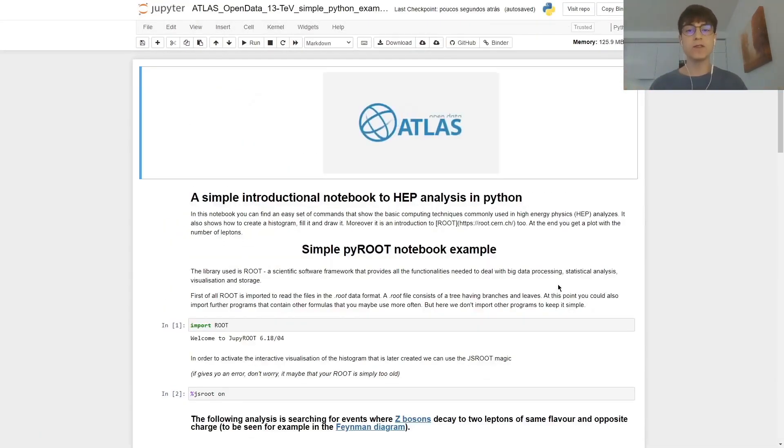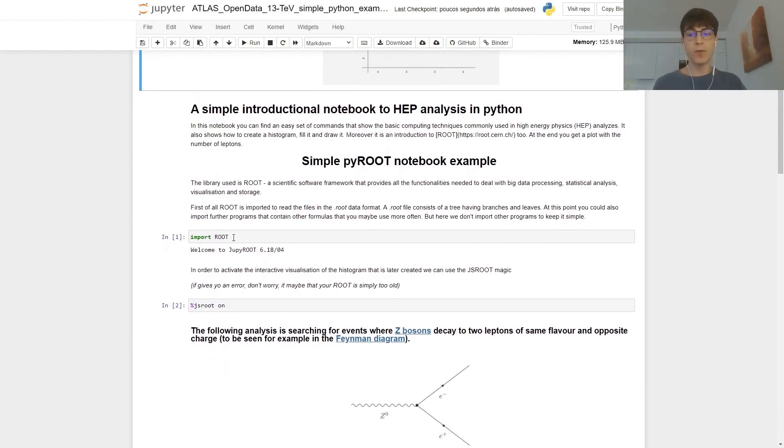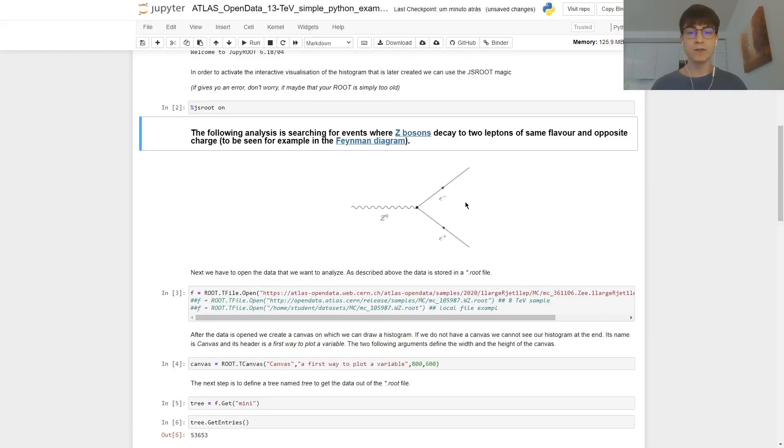First of all, when using ROOT, we need to first import the library. So we write import ROOT. This line over here adds some interactivity to your plot, but if it generates some errors, you can just comment it out by adding a hashtag sign to it and a spacebar. Before we begin with the coding, let's just recap the physical phenomena we're dealing with.